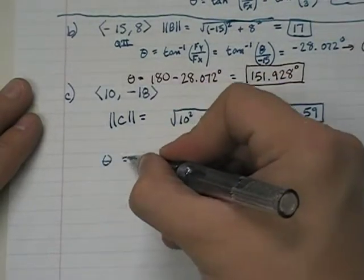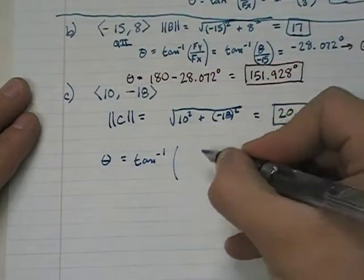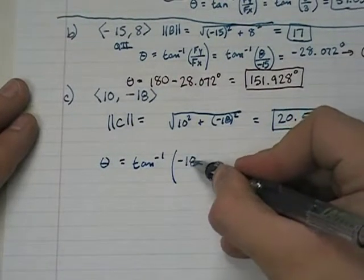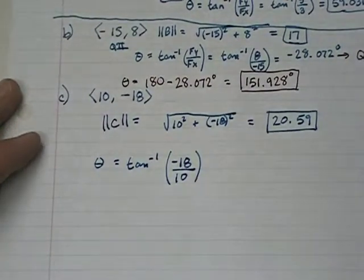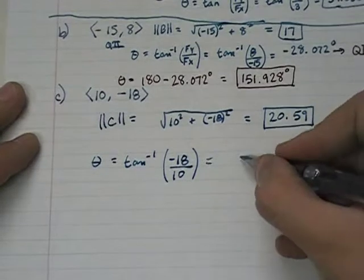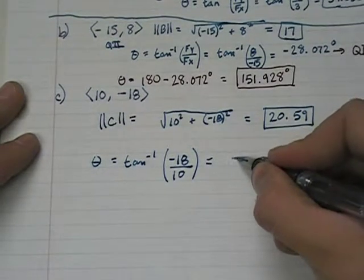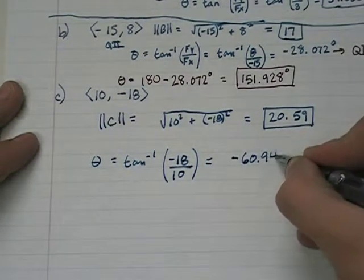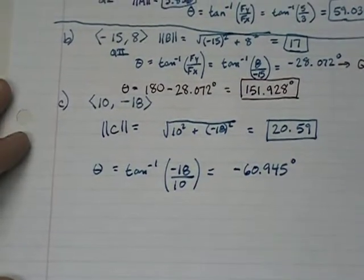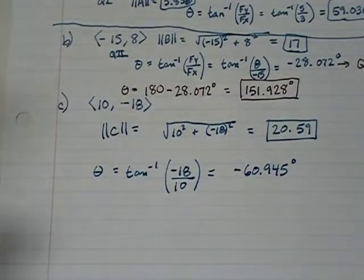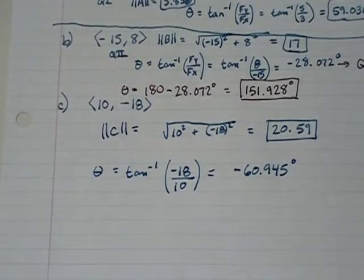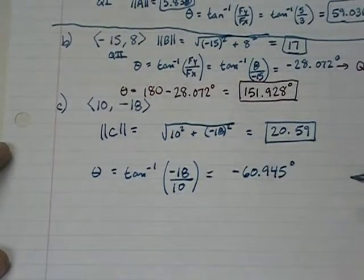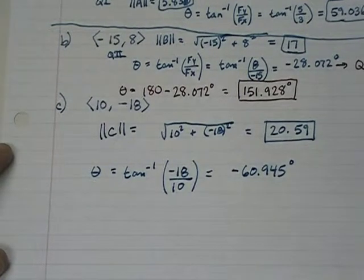Similarly, the direction angle will be the inverse tangent of the y component divided by the x component. So it'll be negative 18 over 10. When I take that inverse tangent, I get negative 60.945 degrees. Now, 10, negative 18, you're going to go 10 to the right and 18 down. That is going to be quadrant 4. Negative 60.945 degrees is also quadrant 4.